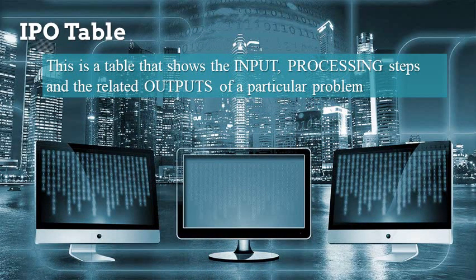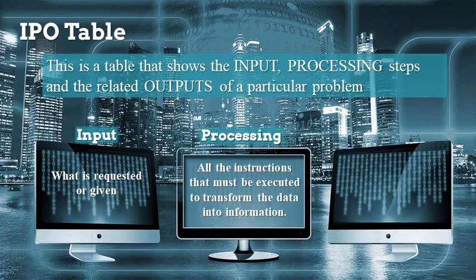An IPO table is a table that shows your input, your processing steps, and the related output for a particular problem. Input is what is requested or given. Processing is all the instructions that must be executed to transform the data into information. Output is the expected result — for example, if I type 'A' on my keyboard, I expect to see the letter 'A' on my screen.